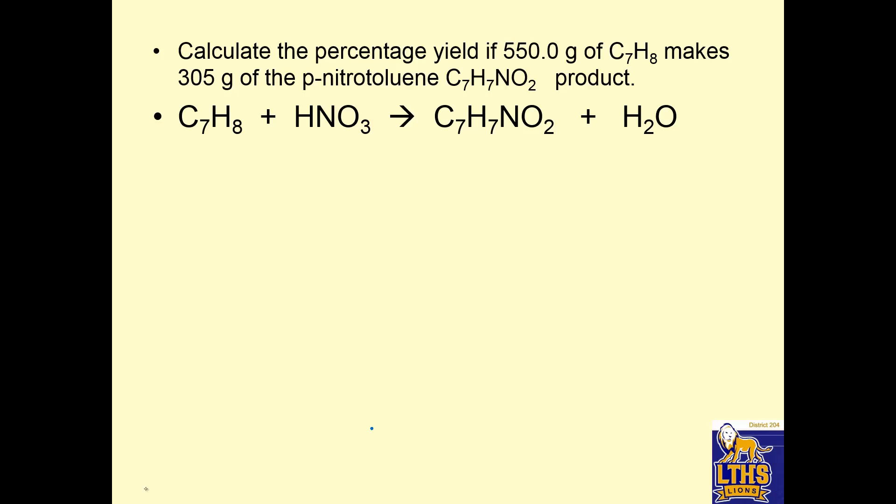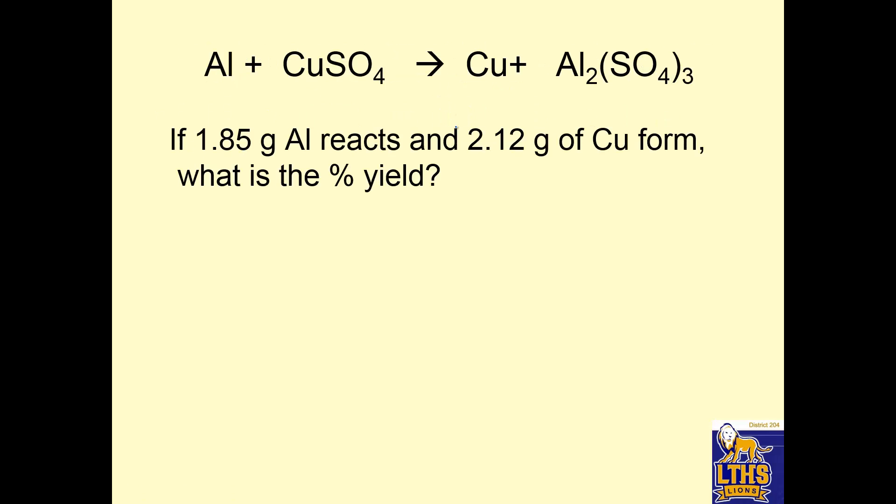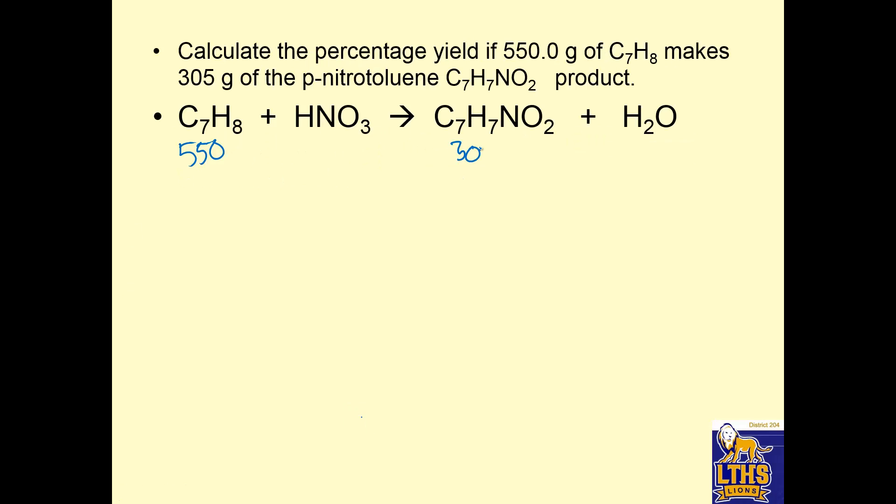Okay, the percent yield is 550 grams of C7H8 makes 305 grams of p-nitrotoluene. So I'm going to label this. 550 makes 305 grams of p-nitrotoluene. So if I want to find the percent yield, what I'm going to do is I'm going to convert this into this, and this is my stoichiometric answer. This is what I should get. So let's go ahead and do that. 550 grams of C7H8. Grams of C7H8. One mole C7H8. I hope it's balanced. I hope it is too.